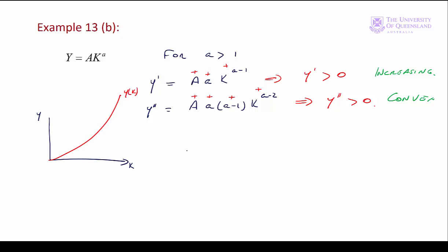Finally, when a is equal to 1, we have y equals A times k to the 1. The first derivative y prime equals A, and the second derivative equals zero. Of course, we have a straight line.